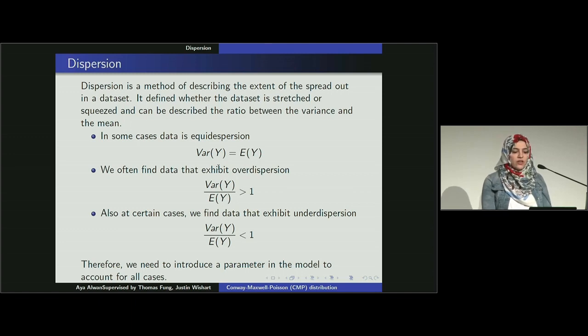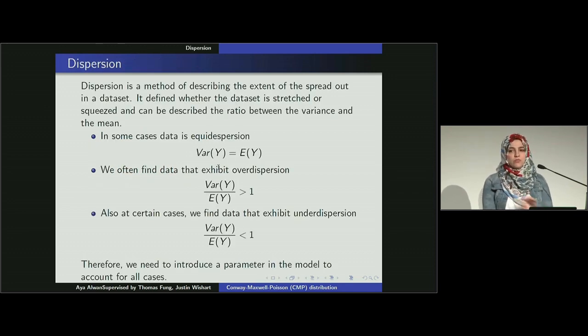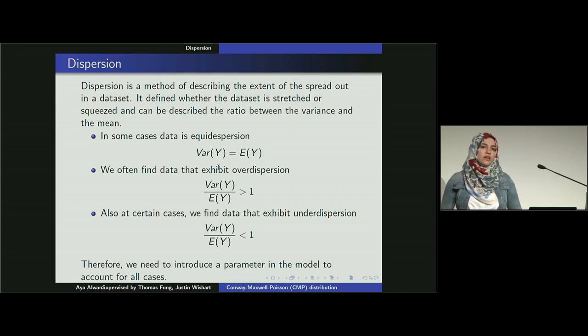What's dispersion? Dispersion is just describing how spread or how squeezed are our data. It's describing the relationship between the variance and the mean. In some kind of data we have variance equal to mean, which is equidispersion. In other cases there's over-dispersion where variance is greater than the mean, or under-dispersion where variance is less than the mean.